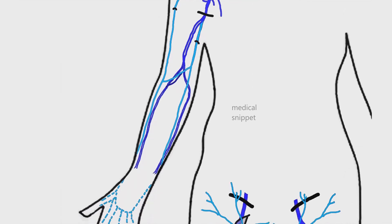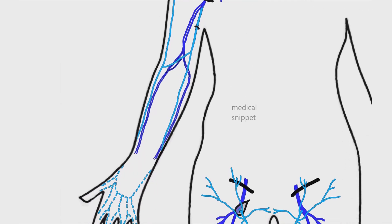The median antebrachial vein begins from the palmar venous plexus. It ascends in the forearm and drains into any one of the veins in front of the elbow. This completes the venous system of the upper limb.